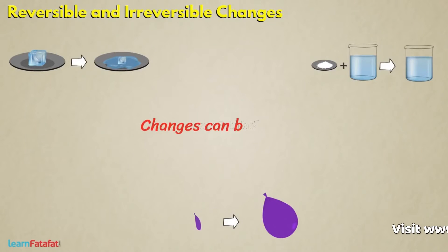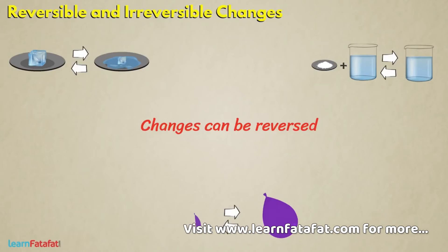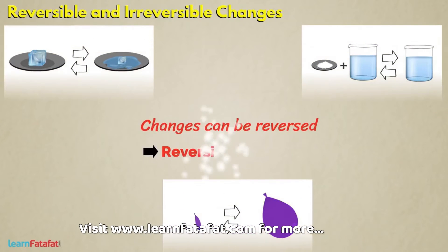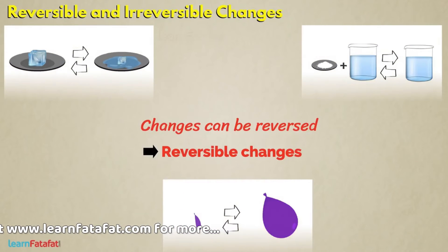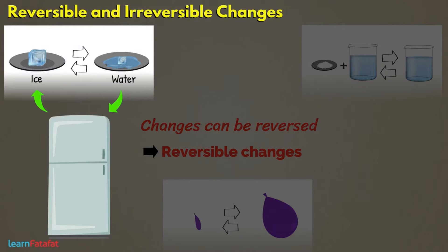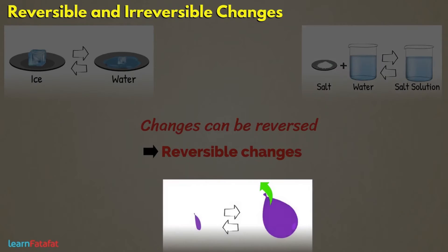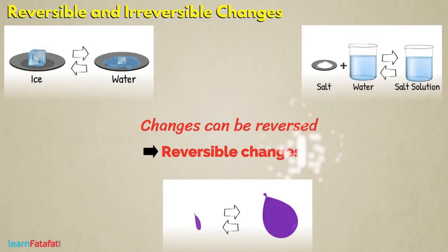Some changes can be reversed, i.e., the changes can be undone. Such changes are called reversible changes. For example, we can convert water back into ice by keeping it in a refrigerator. We can separate the salt and water by evaporation. If we release air from the balloon, it regains its shape. These are all reversible changes.